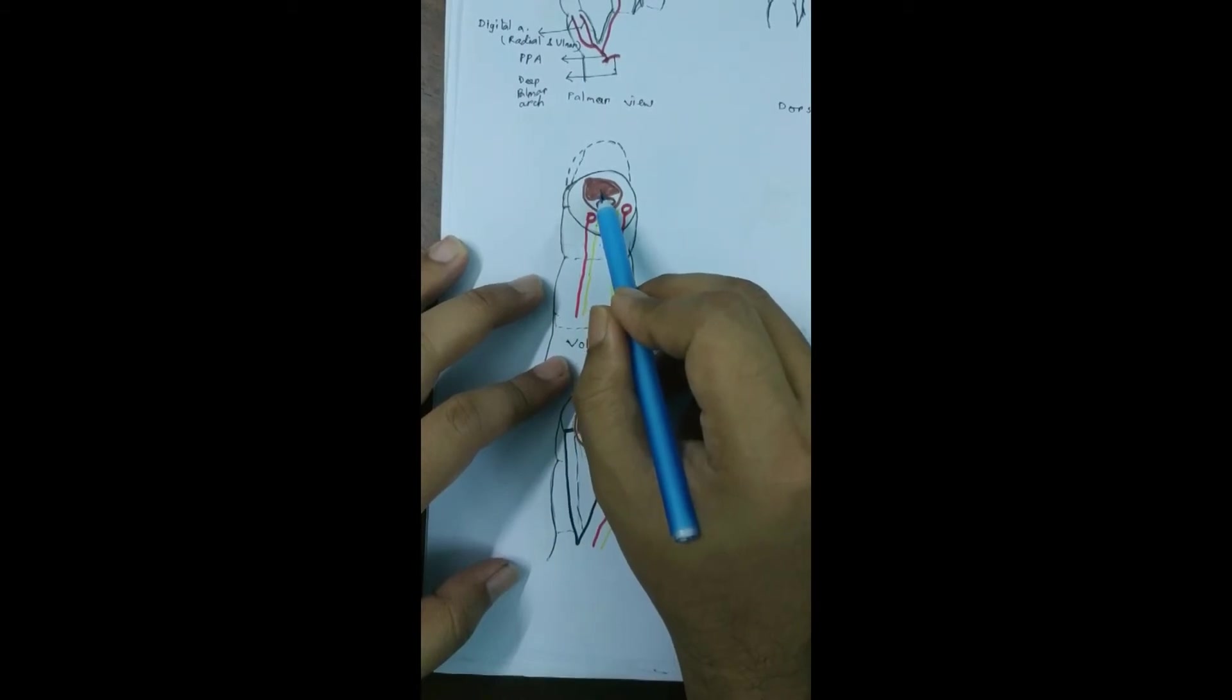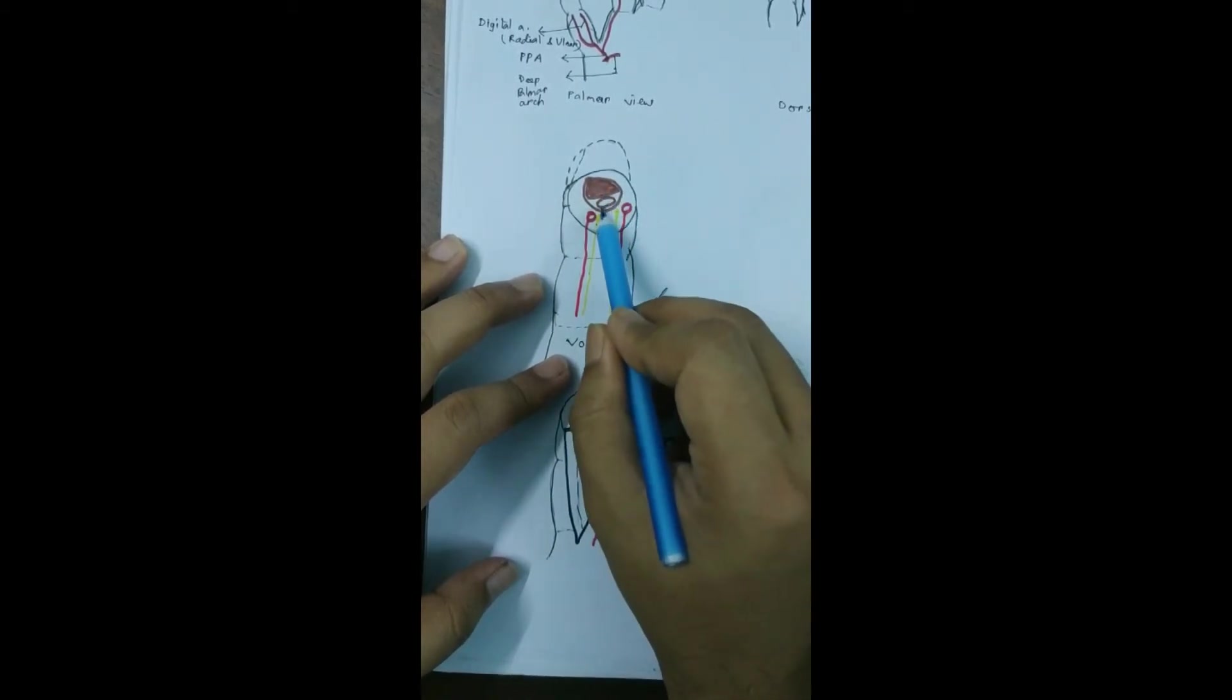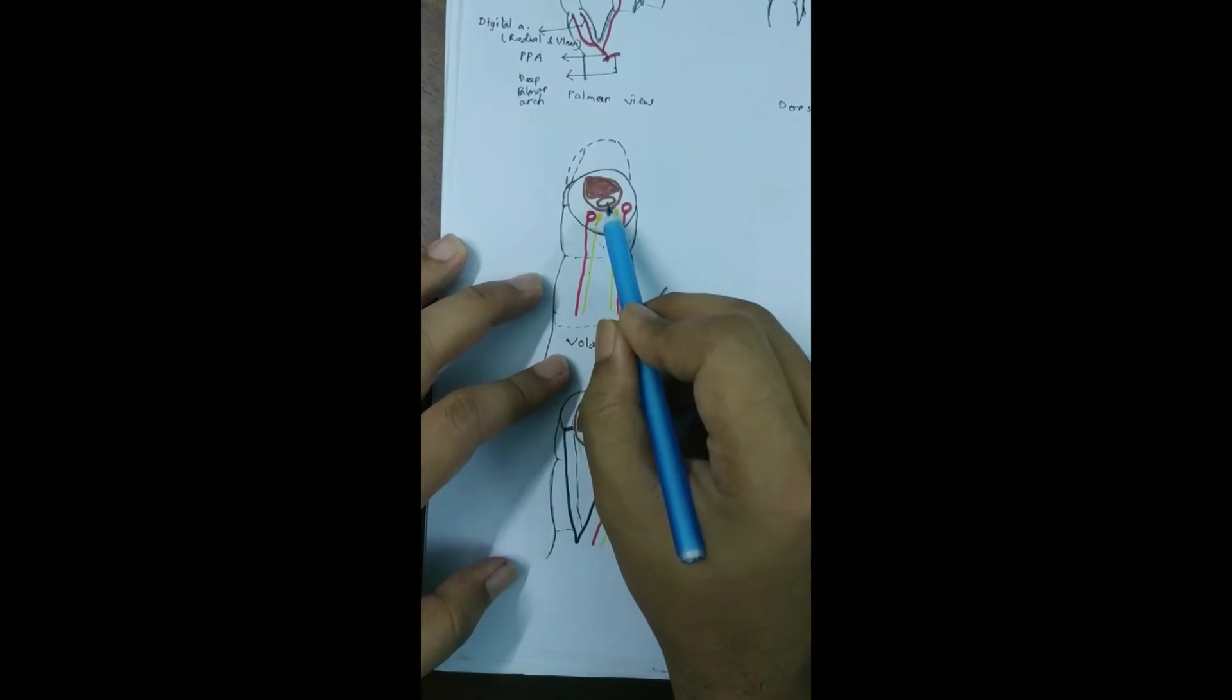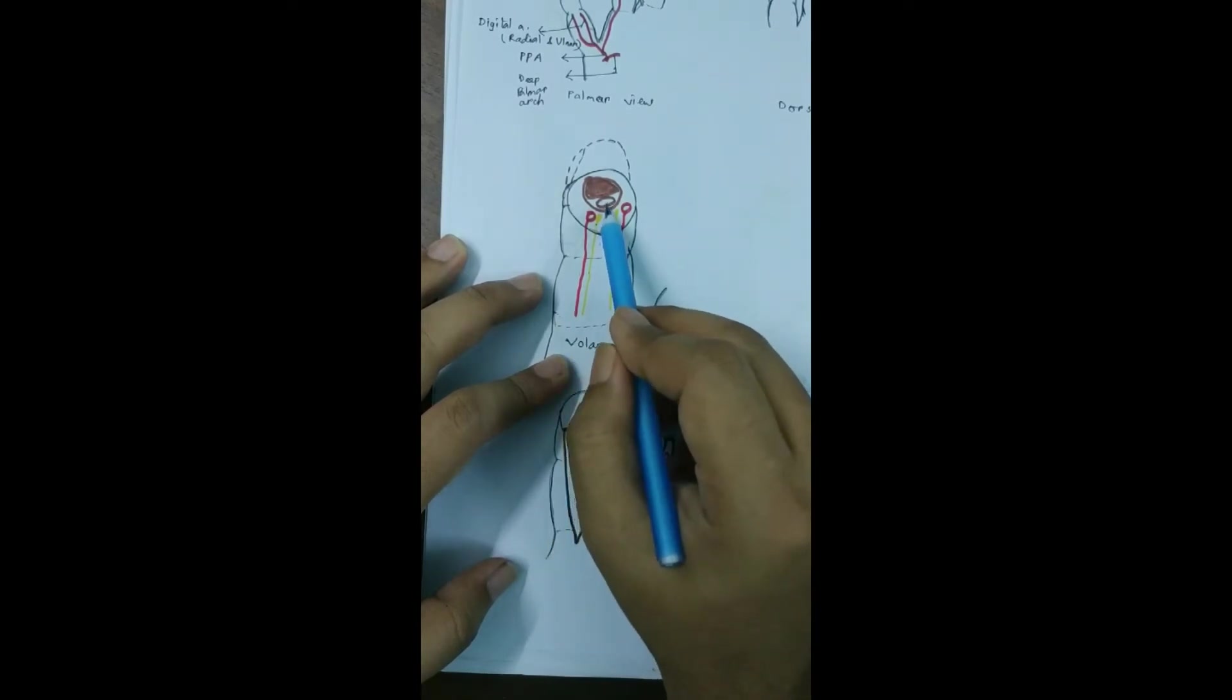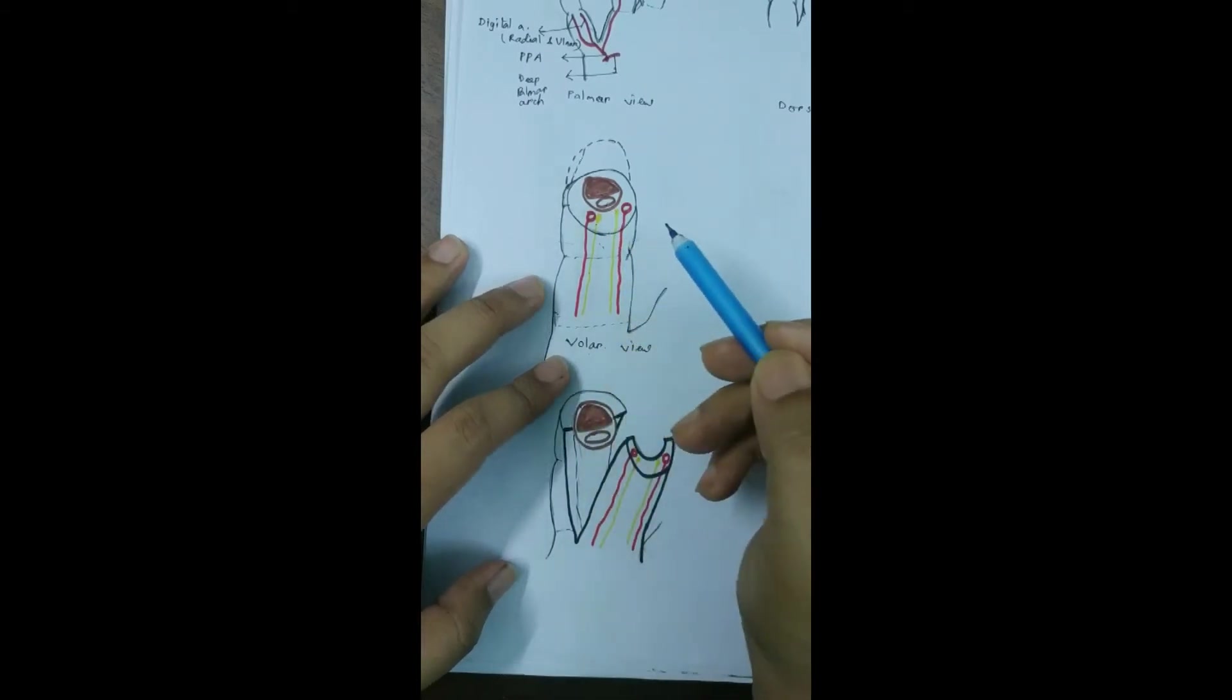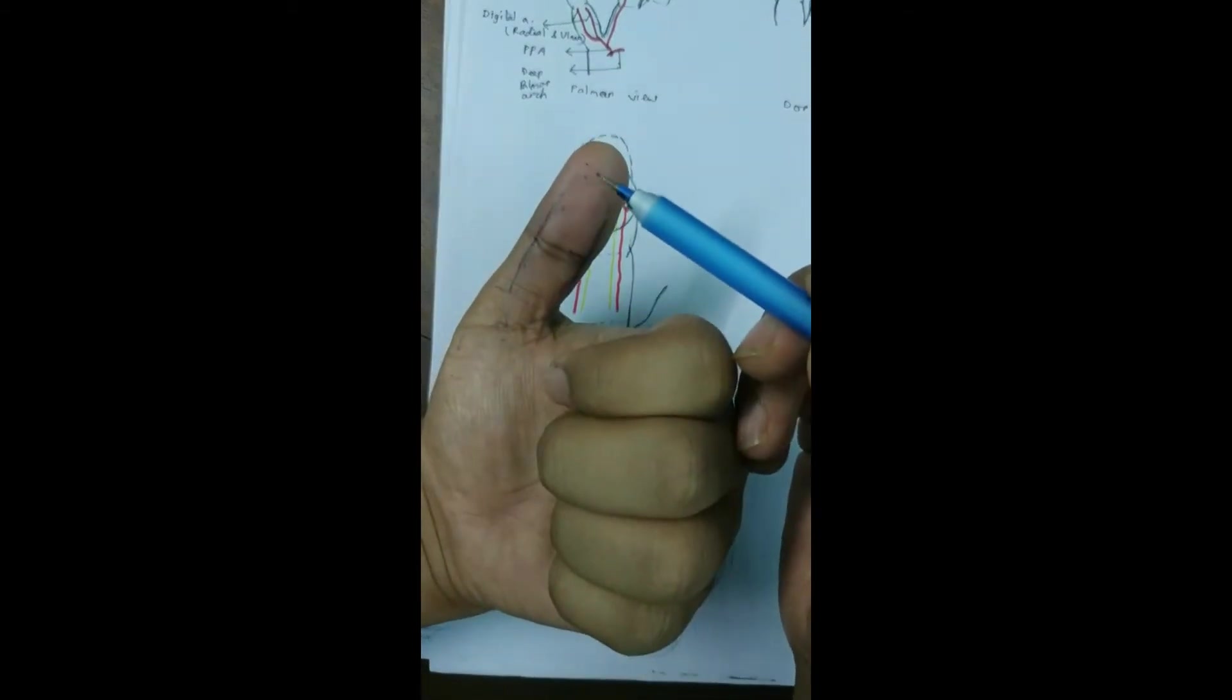This is the bone, the terminal part of the distal phalanx. And this is the flexor pollicis longus tendon, which we encounter at the proximal part of the distal phalanx. I already drew it here for better understanding.